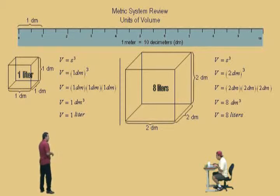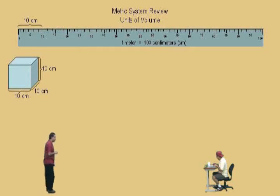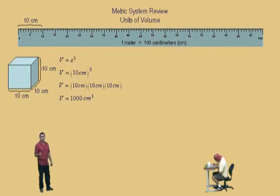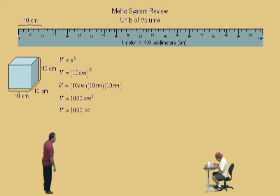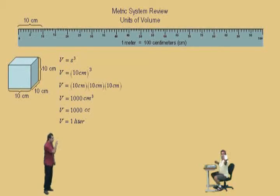And here we show that a one decimeter cubed is actually one liter. A cube that's two decimeters as its side length will actually hold eight liters of a liquid. Now let's do another cube, but this time its side length is ten centimeters — and let's calculate its volume. Volume is side length cubed, so the volume is ten centimeters cubed, which is ten centimeters times ten centimeters times ten centimeters, which is one thousand centimeters cubed. Remember, one thousand centimeters cubed is the same as one thousand cc's — that's what cc means: centimeter cubed. And ten centimeters is actually equivalent to one decimeter, so one thousand cc's is equivalent to one liter.